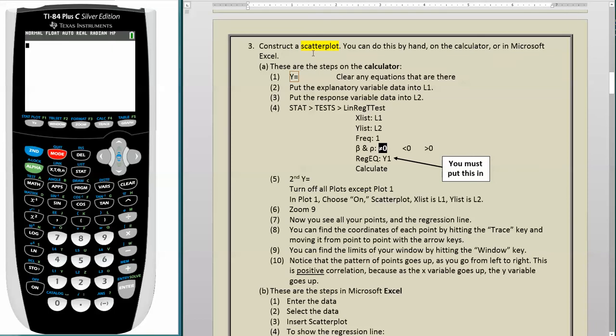Number 3. Construct a scatter plot. You can do this by hand, on the calculator, or in Microsoft Excel. So here are the steps on the calculator, and we will do this. First you go to the Y equals button and clear any equations that might be in there. So here's the Y equals button. I'm going to click on that, and there you see an equation. I want to get rid of that equation. So I'm just going to hit the clear button, now it's gone, and that's what you want.